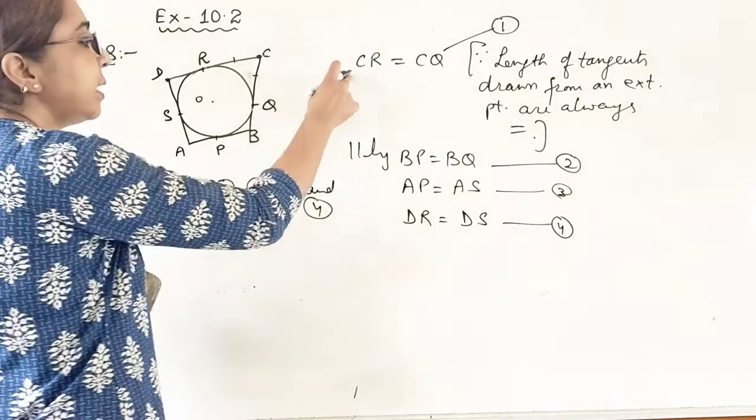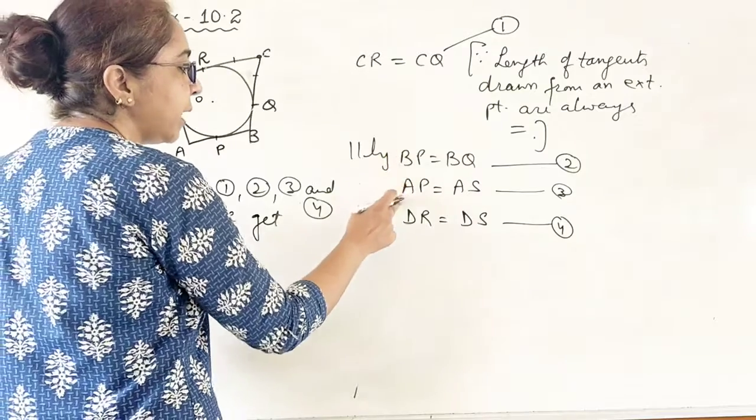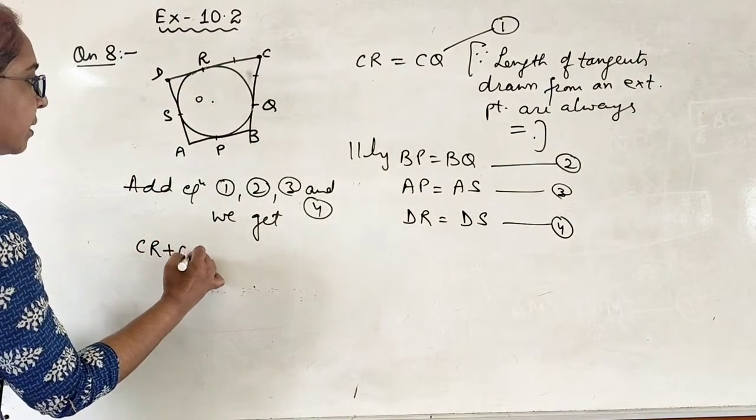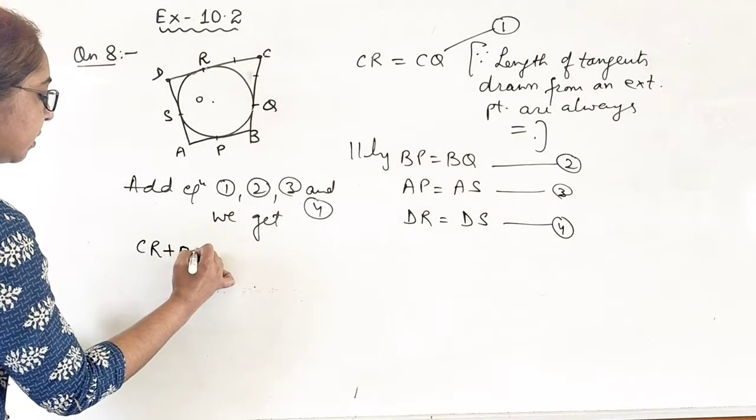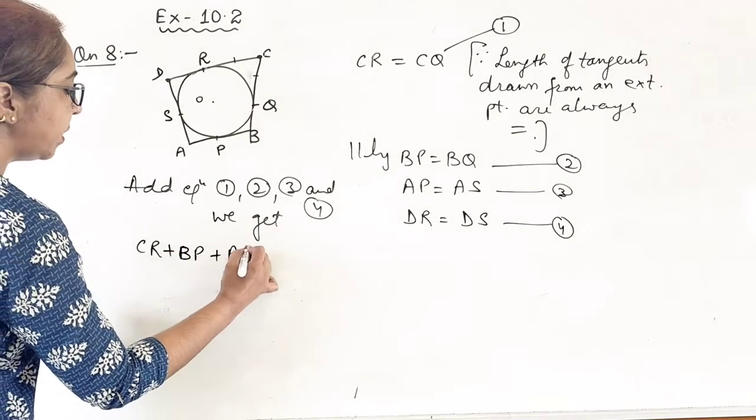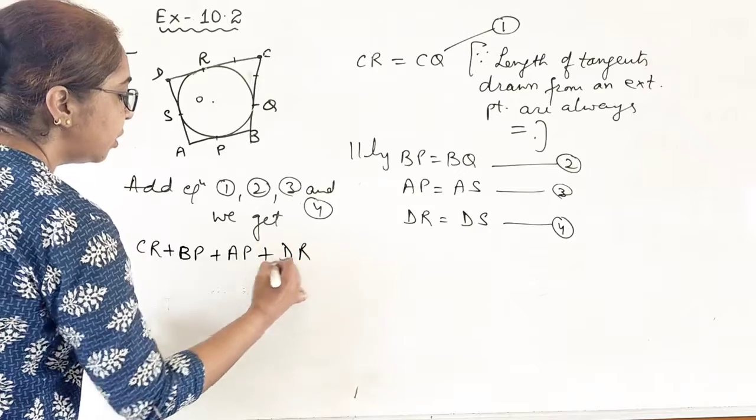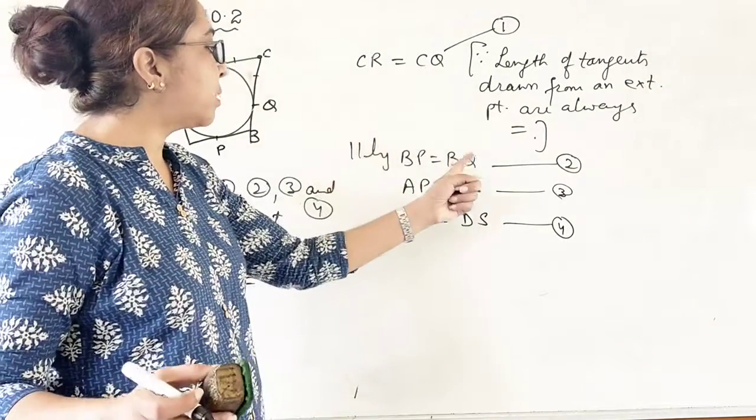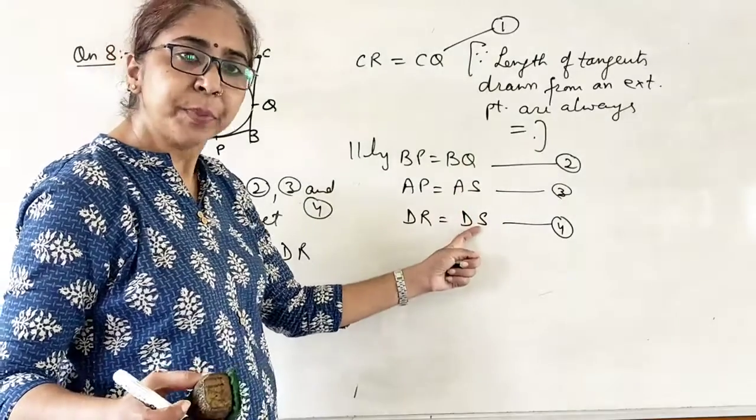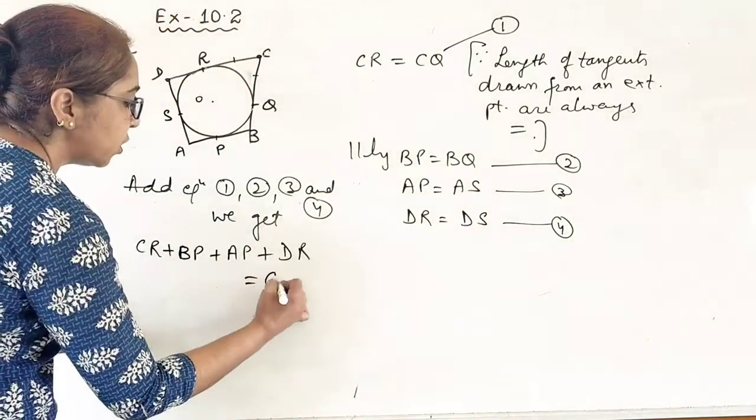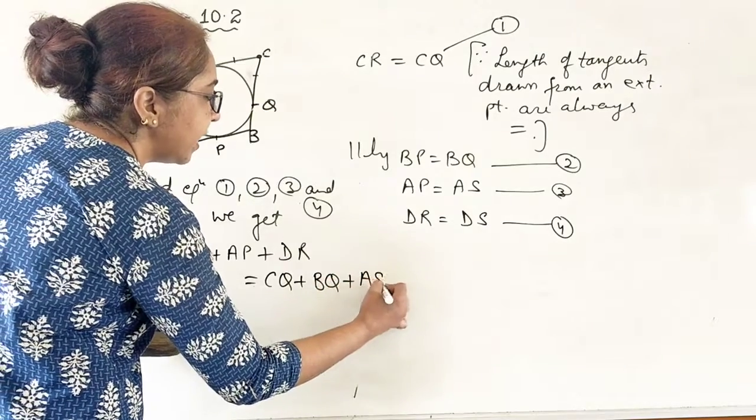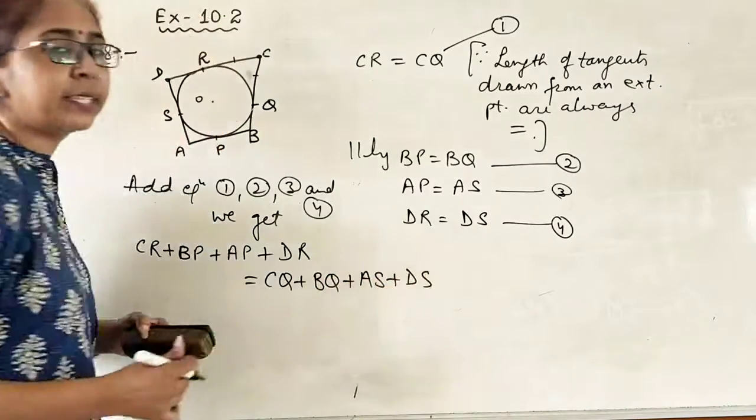So we get, what we get? That is CR plus BP plus AP plus DR. CR plus BP plus AP plus DR should be equal to CQ plus BQ plus AS plus DS.